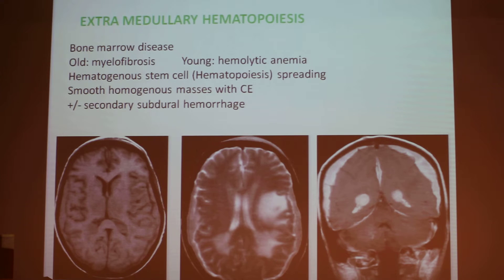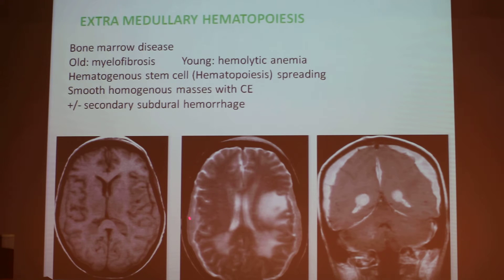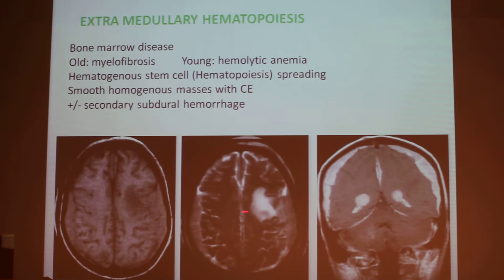When you have a bone marrow disease and the bone marrow doesn't function, it has to be replaced by something. Some stem cells go throughout the organism and spread — they go to the meninges and to the choroid plexus, provoking thickening of these structures with a big contrast uptake, sometimes a mass effect and edema, and sometimes it can even bleed.